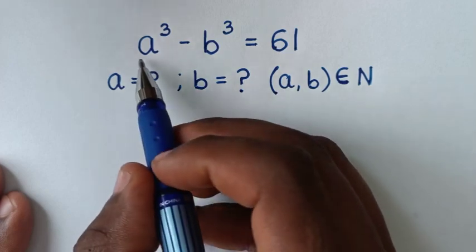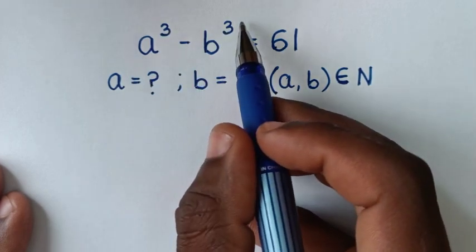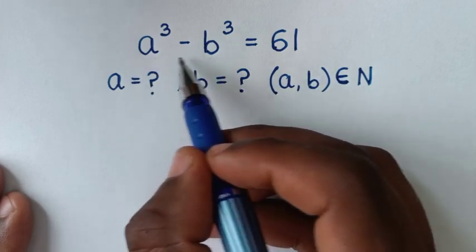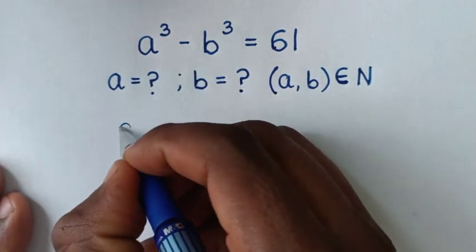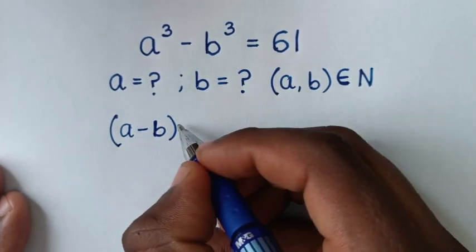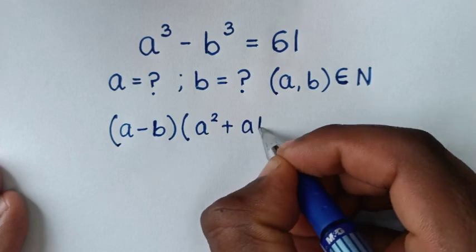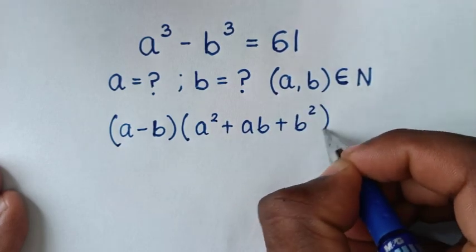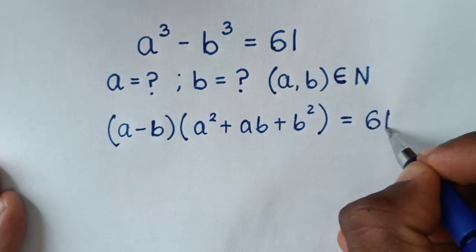Now, in the first step, from here on the left side, a³ minus b³ is in the form of a perfect cube. So, a³ minus b³ is equal to (a - b)(a² + ab + b²), and that is equal to 61.